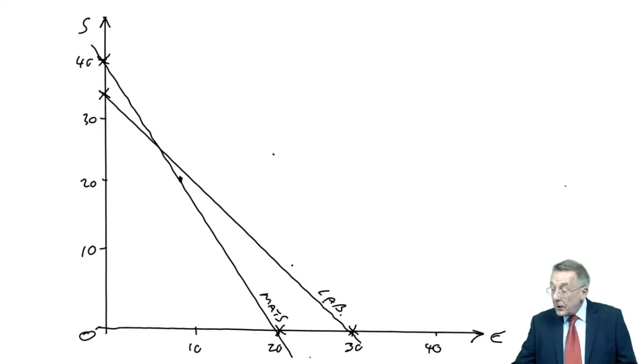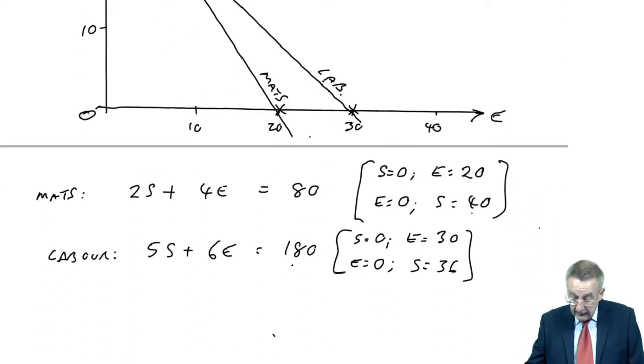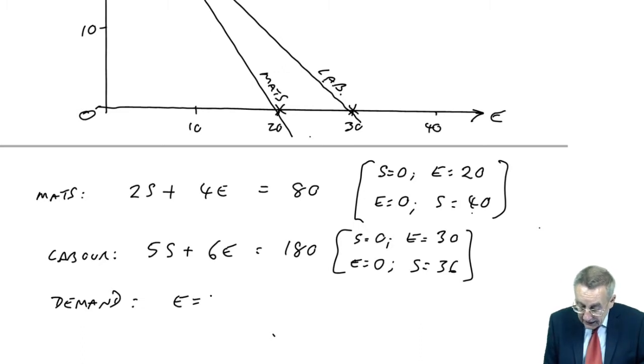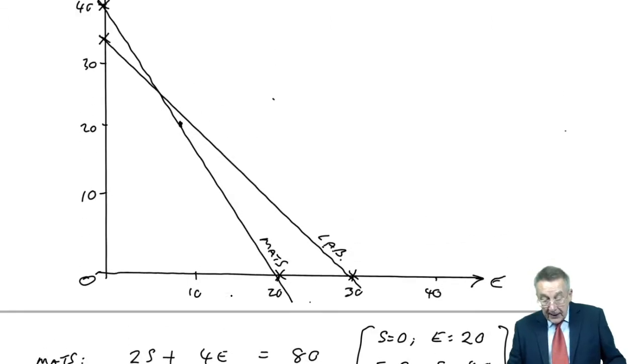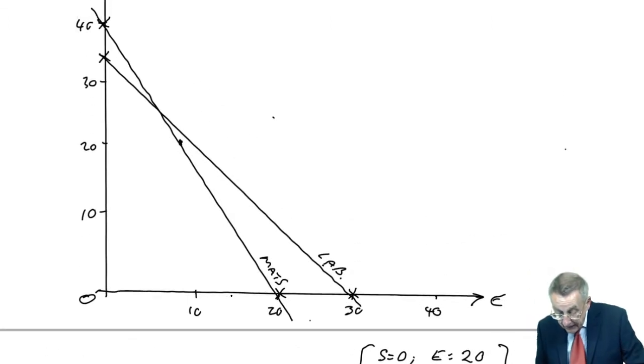What else? Well, we've also got this demand constraint. S, remember, could be anything but E was limited to 10. And so for E to be equal to 10,